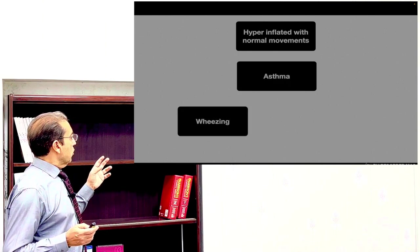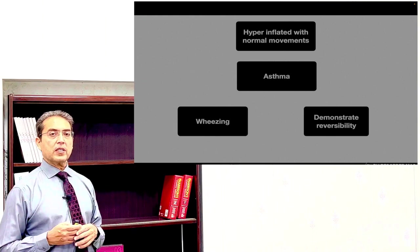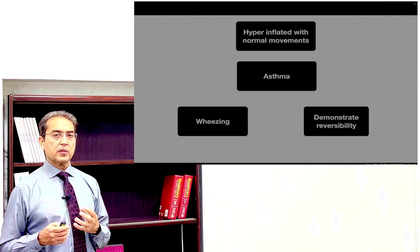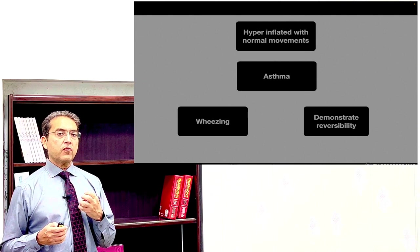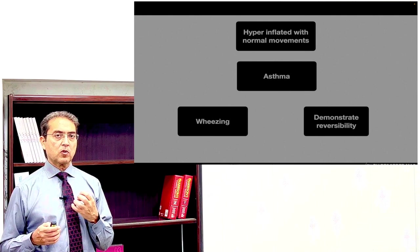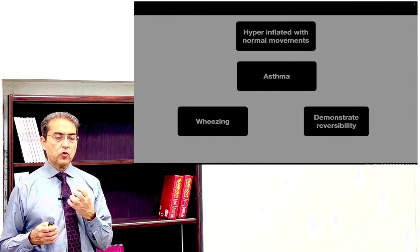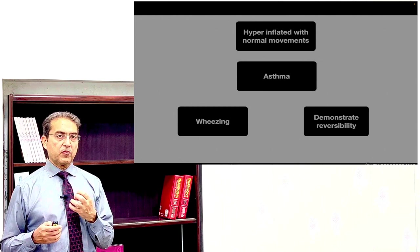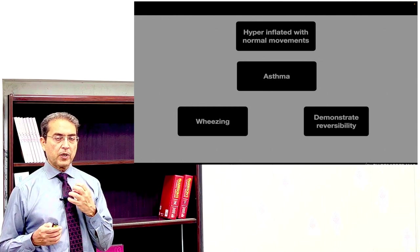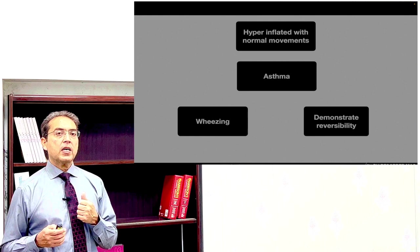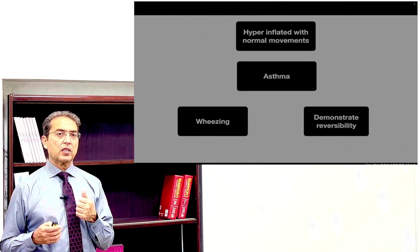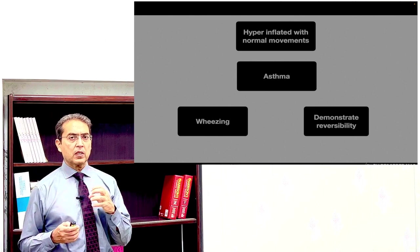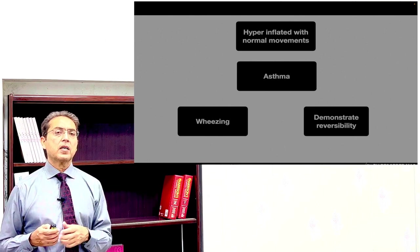In asthma, look for the presence of wheeze and demonstrate reversibility. The patient has a history of improvement in symptoms spontaneously, or if you nebulize with salbutamol the symptoms improve. Pulmonary function tests also show improvement. The pulmonary functions we look for are FEV1 and peak flow rate — we check for improvement in peak flow rate and FEV1.